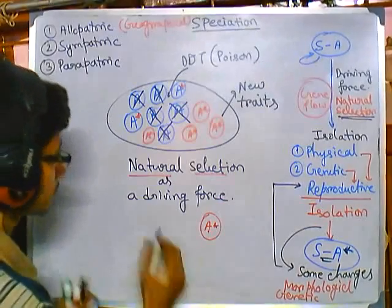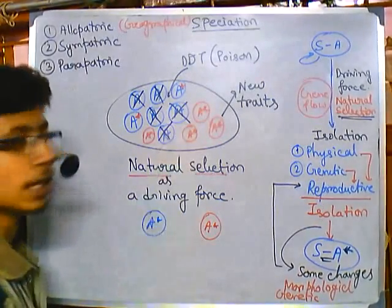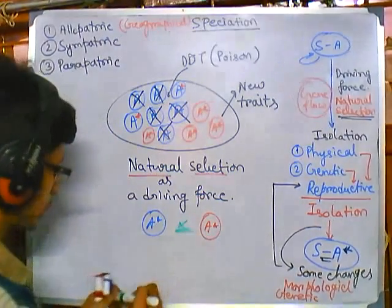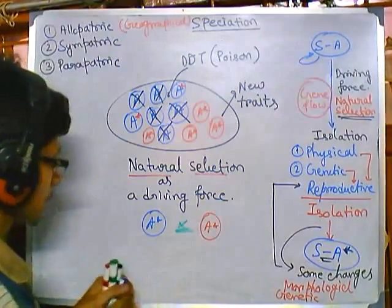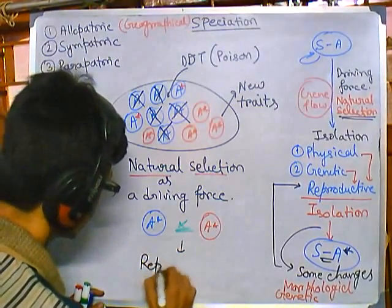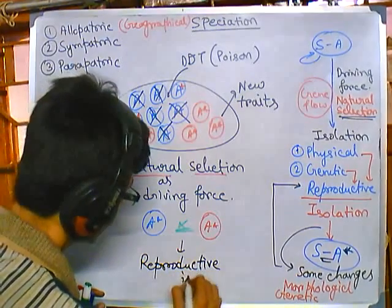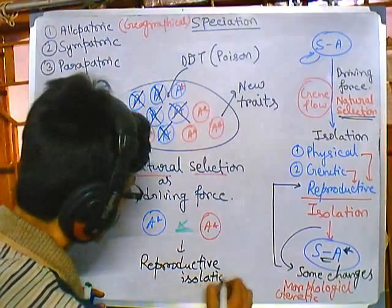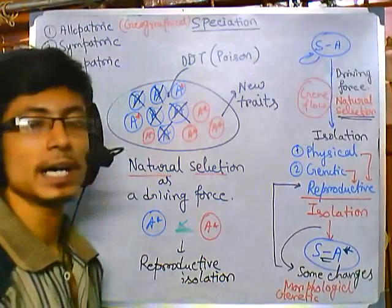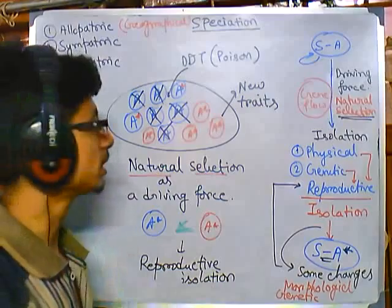Now the new members and the old members — due to the achievement of the DDT-resistant trait — may no longer be able to reproduce between themselves. So we say they have achieved reproductive isolation. Importantly, in this case reproductive isolation is achieved without any geographical separation.